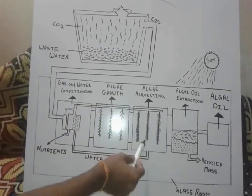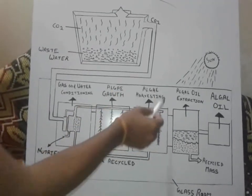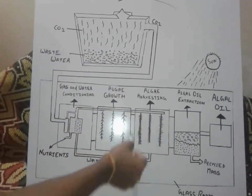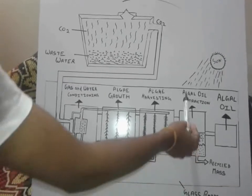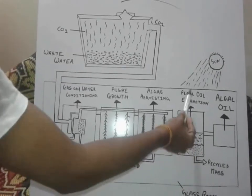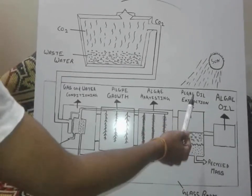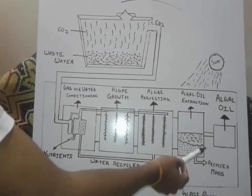The third container is algae harvesting — algae can be easily harvested in this. The fourth container is algae oil extraction.